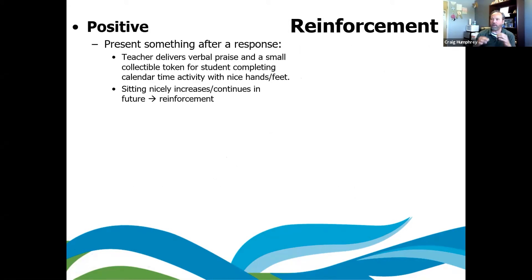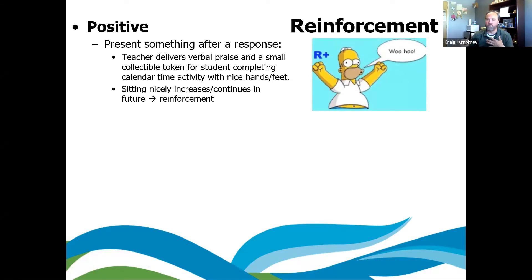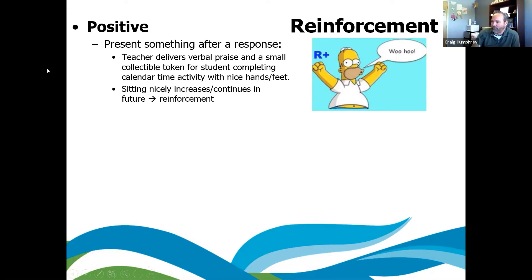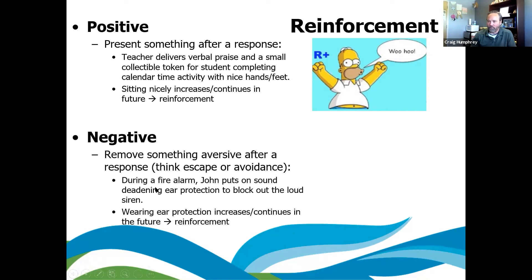A positive reinforcement example: a teacher gives verbal praise or a small collectible token for completing calendar time with nice hands and feet. As a result, if sitting nicely increases in the future, that verbal praise and token is reinforcing. A negative reinforcement example: during a fire alarm, John puts on sound-dimming ear protection to block out the loud siren, and wearing ear protection increases and continues in the future — that is reinforcing to John. Both positive and negative reinforcement still cause an increase in behavior.